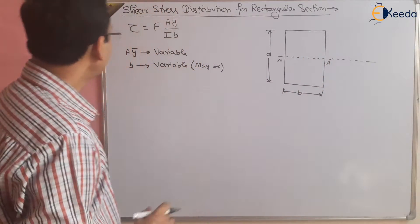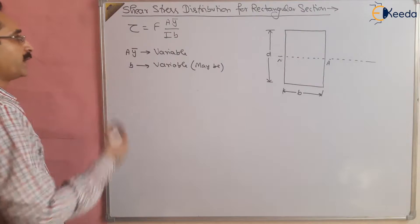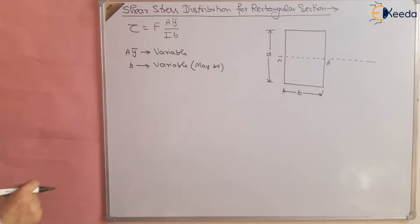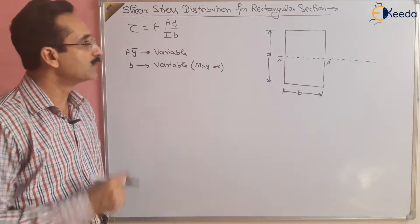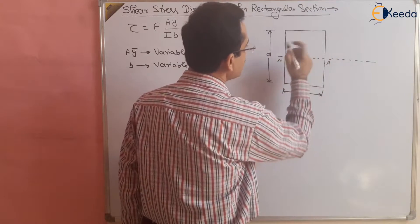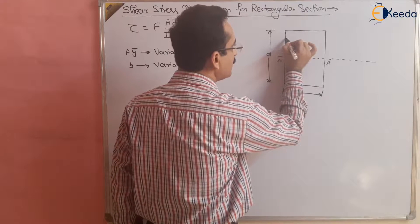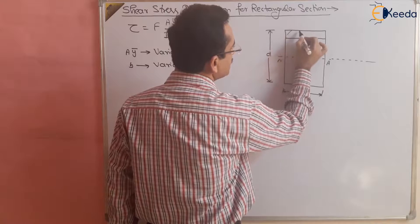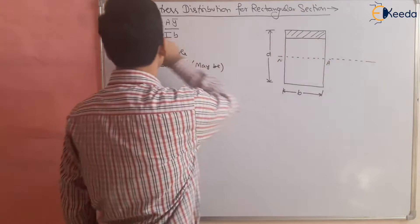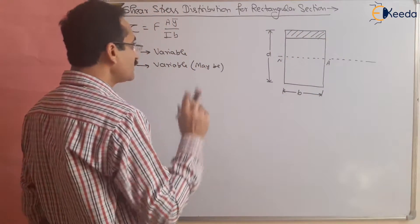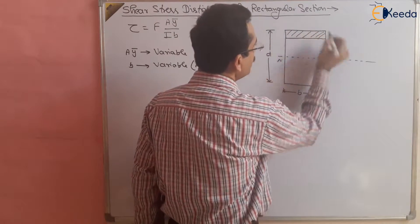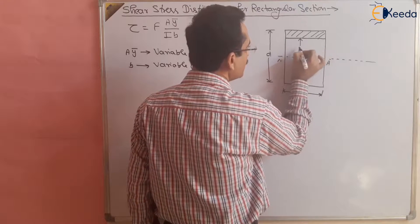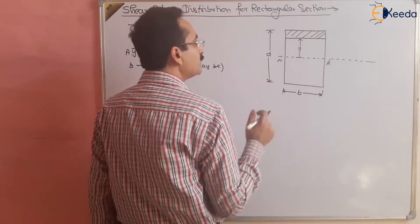For rectangular section, B is not variable. Since Aȳ is variable, we have to find out the shear stress distribution by taking a small strip and finding the shear stress on that strip. It is better to take the upper part of the strip so that it is easy to demonstrate the shear stress distribution for the entire section. The width of the beam is constant because it is a rectangular section. Suppose this section is at a distance y from the neutral axis.